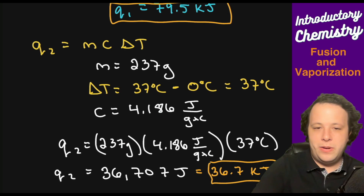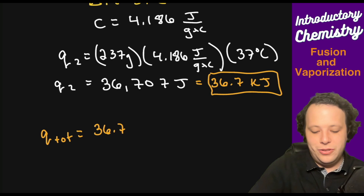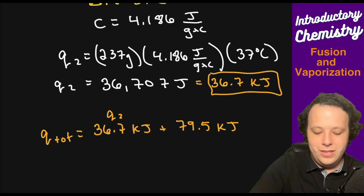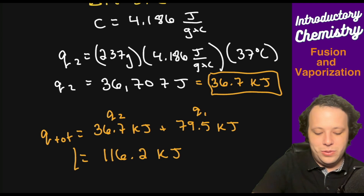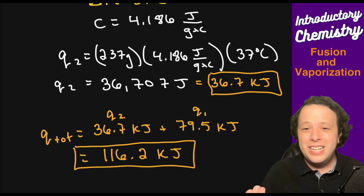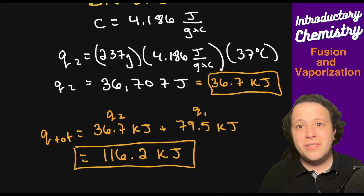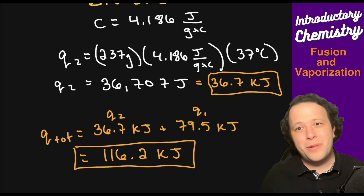Now we add: q total = 36.7 kJ + 79.5 kJ = 116.2 kJ of total energy required to melt the ice pack and heat the water from 0 to 37°C. Heat of fusion and vaporization problems can involve many steps — if you have a multi-step heating, cooling, or phase change problem, you must add up every single part. I hope this video helped — please like and subscribe, and I'll see you in future videos!